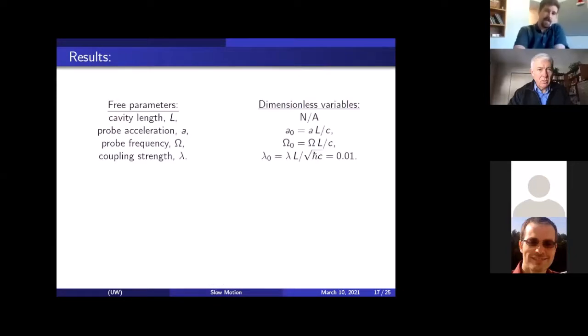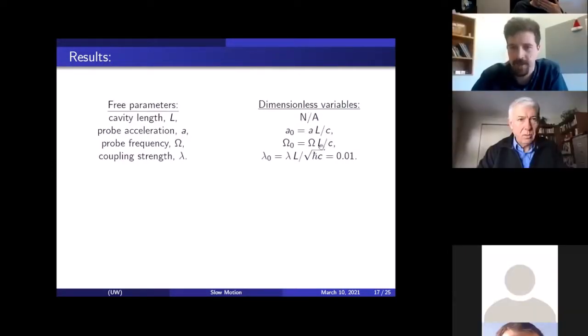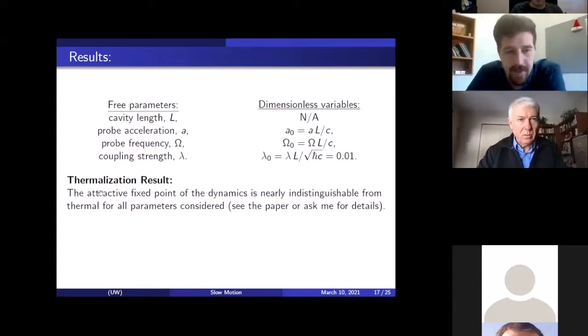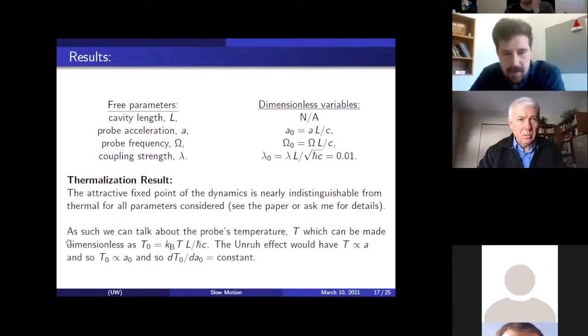And really we have full access to any dynamical question we'd like to ask in this setting. Okay, so let's talk about the results now. We have four free parameters in our setup. There's the cavity length, the probe acceleration, the probe frequency, and the coupling strength. We make those all dimensionless with the length a l over c, omega l over c, and lambda l over square root of h bar c. And we fix the coupling strength to be 0.01. So what we're doing here is non-perturbative. So what do we find in terms of thermalization? The dynamics has an attractive fixed point. And this attractive fixed point is nearly indistinguishable from thermal for all parameters considered. And I can't tell you too many details about that now, but it's all in the paper. And as such, what this means, the fact that the probe does thermalize, we can talk about the probe's temperature t, which we can make dimensionless by multiplying by l.